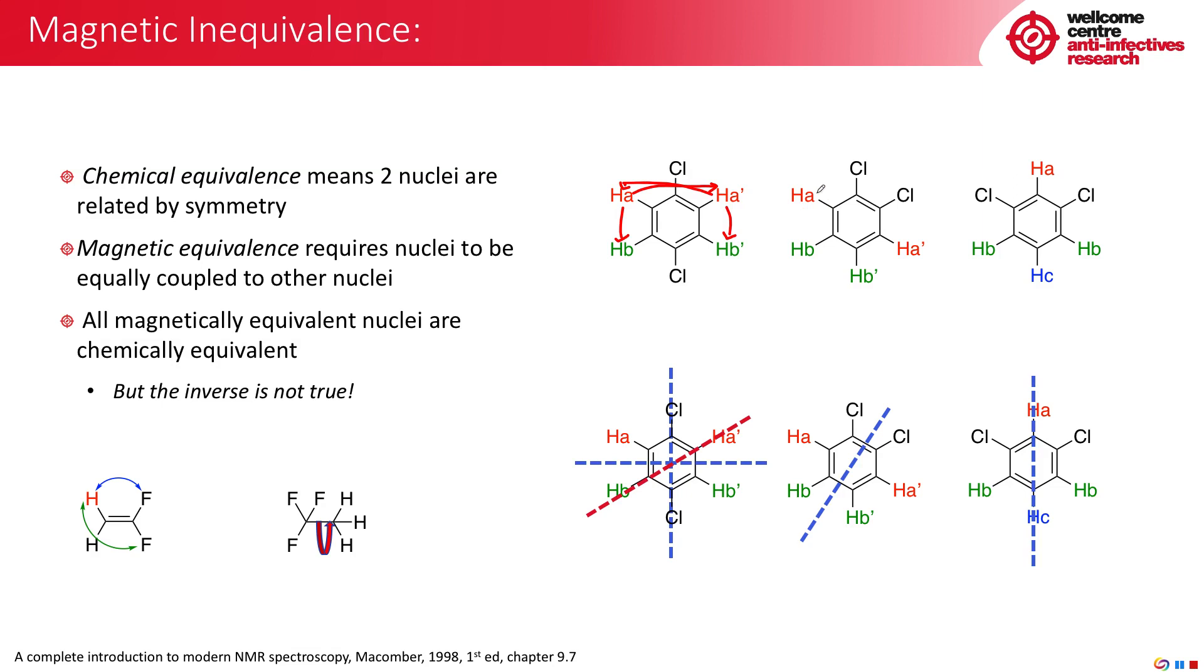A couples to both B signals, as can A prime. However, the relationships are different. The J values for HA prime to B prime are different to those for HA to HB prime. By contrast, if we take the 1,3 isomer, because we could have a line of symmetry through here, the HBs are in fact magnetically equivalent as well as chemically equivalent. You can see they will both couple in equivalent fashion to HA, HC, and HC. All of the nuclei that are magnetically equivalent are chemically equivalent, but not all nuclei that are chemically equivalent are in fact magnetically equivalent.